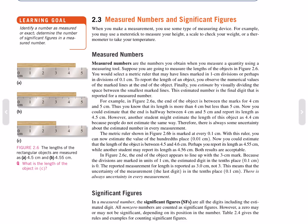In Figure 2.6c, the end of the object appears to be in line with the 3 cm mark. Because the divisions are marked in units of 1 cm, the estimated digit is the tenths place, 0.1, which is 0. The reported measurement of the length is 3.0 cm, not 3. This means that the uncertainty of the measurement, the last digit, is the tenths place. There is always uncertainty in every measurement.